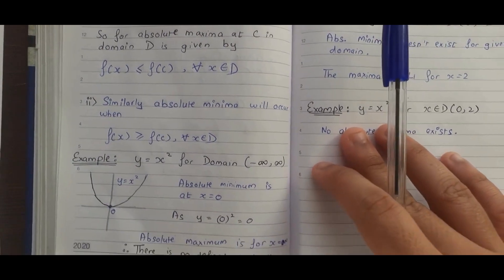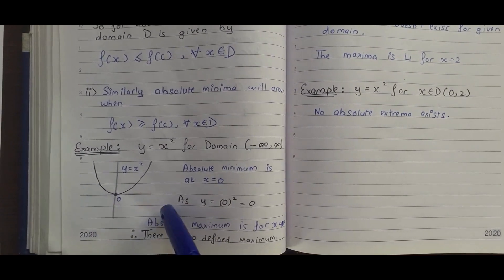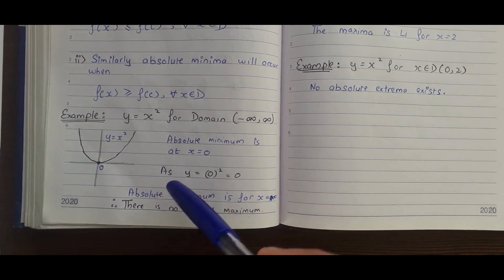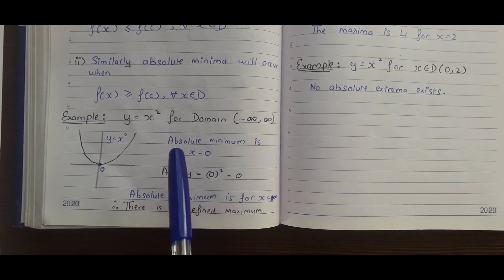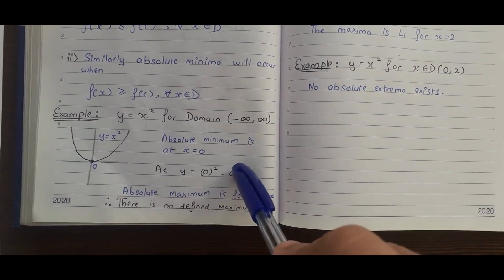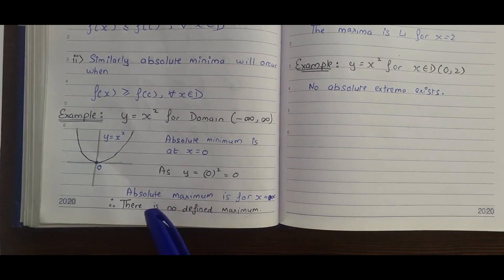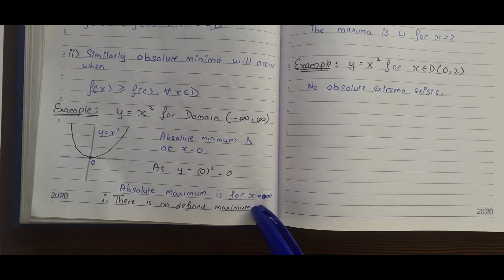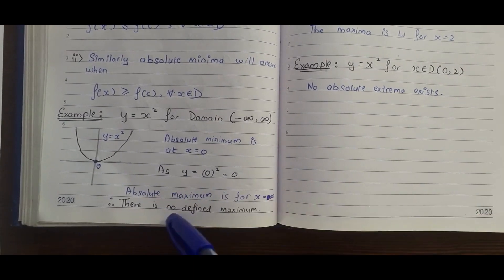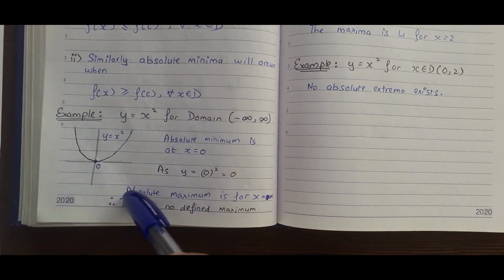For example, y = x² with domain negative infinity to infinity — we are considering all values on the x-axis. From the graph, the minimum is zero and the maximum is when x reaches infinity. We verify: the absolute minimum is at x = 0, giving y = 0² = 0. For the absolute maximum at x = infinity, since infinity does not have a properly defined value, we say the maximum does not exist. Putting x as infinity gives y as infinity squared, which is still infinity — no defined value, so no defined maximum.